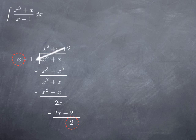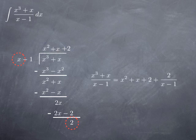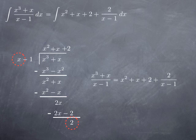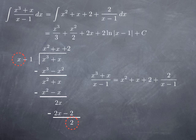The long division tells us that (x³ + x)/(x − 1) can be rewritten as the quotient x² + x + 2 plus the remainder 2 divided by (x − 1). So the integral becomes the integral of x² + x + 2 + 2/(x−1). The polynomial integrates to x³/3 + x²/2 + 2x, and the fraction 2/(x−1) is of the form du/u, giving 2 ln|x−1|. All of this up to a constant.